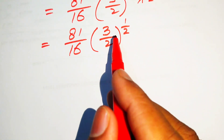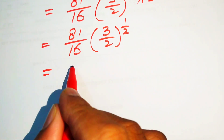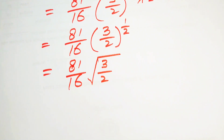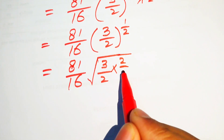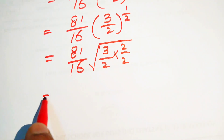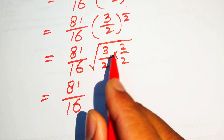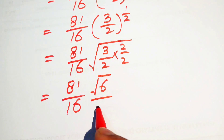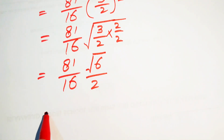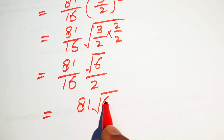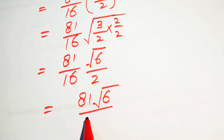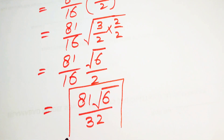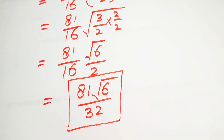We write (3/2)^(1/2) in radical form as √(3/2). Inside the square root we multiply and divide by 2, giving 81/16 · √6 / √4 = 81/16 · √6 / 2 = 81√6 / 32. This is our required simplified answer. Thank you for watching.